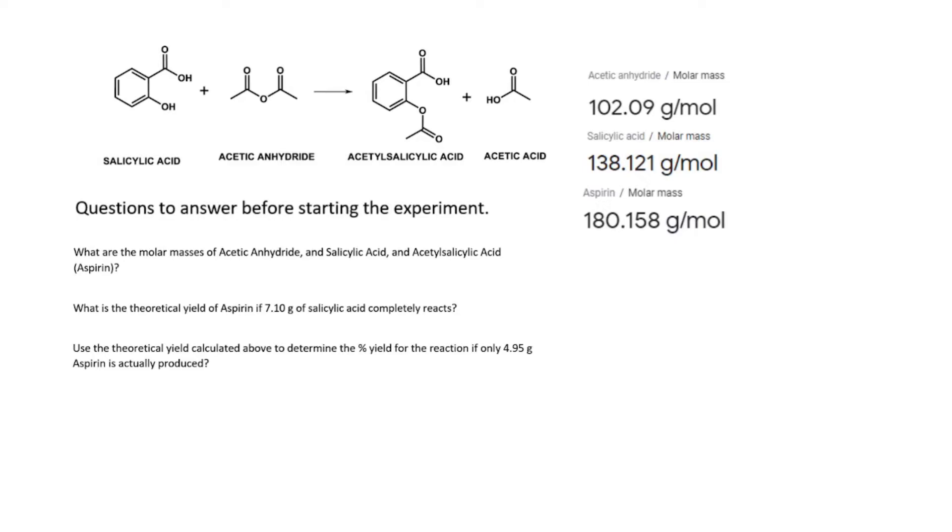Question number two: What is the theoretical yield of aspirin if 7.10 grams of salicylic acid completely reacts? Theoretical yield is when a reaction happens perfectly with no error and no waste. From how the question is worded, we can tell that salicylic acid is going to be our limiting reagent.